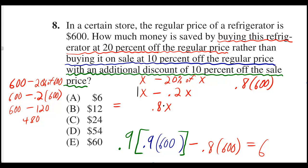But what if you bought it on sale at 10% off? Well, then you would only be left with 90%, so you would multiply by .9, and that's everything in blue. And then what if there was an additional discount of 10% off that, off that sale price?